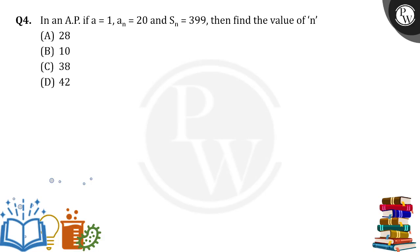So everyone, in an AP, if A is equal to 1, AN is equal to 1, and SN is 399, find the value of N.